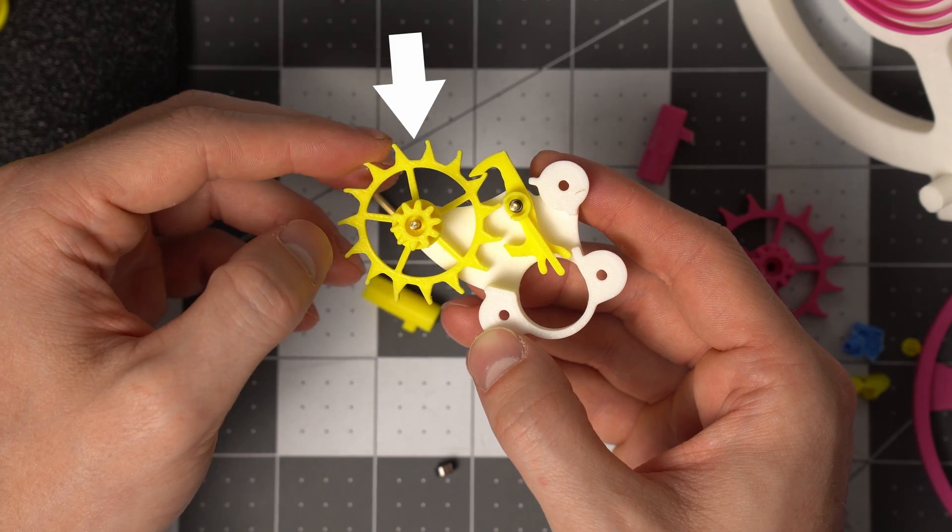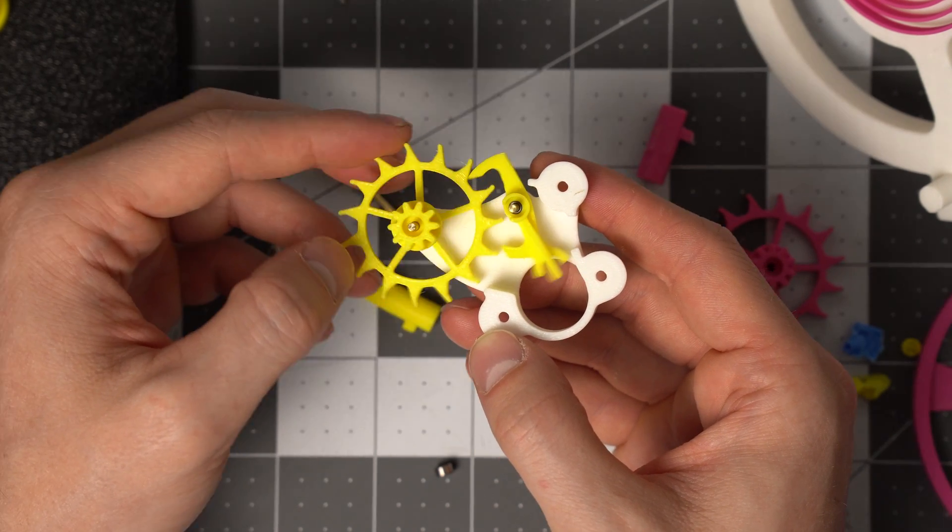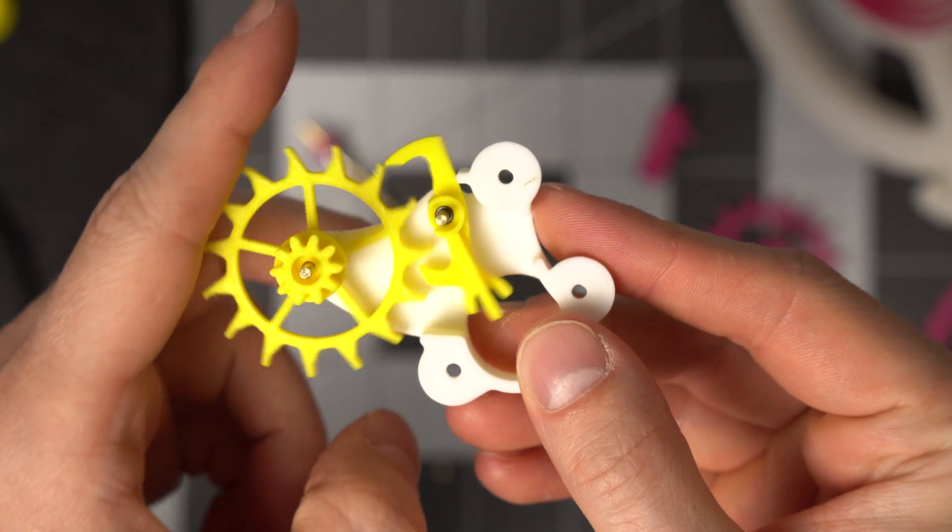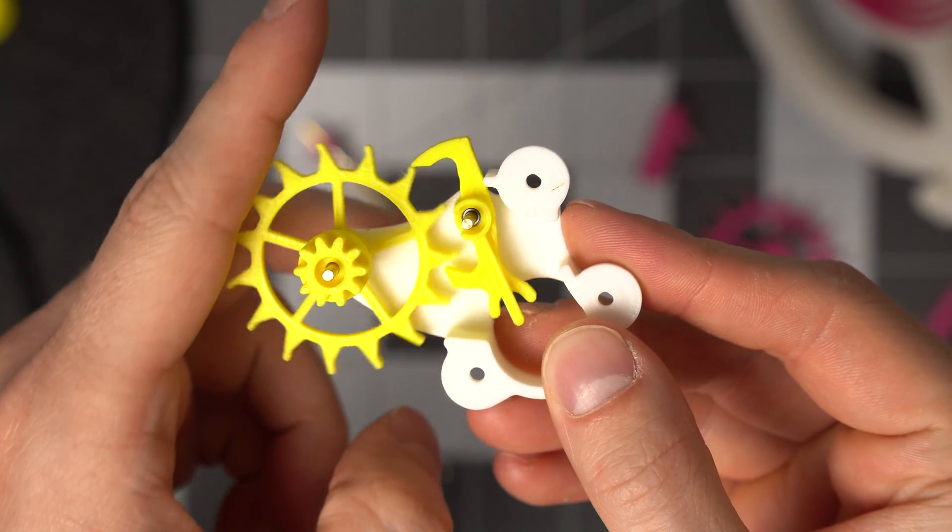With only the escape wheel and the fork installed, the escape wheel should run freely in the reverse direction and should get caught when rotated in the forward direction.